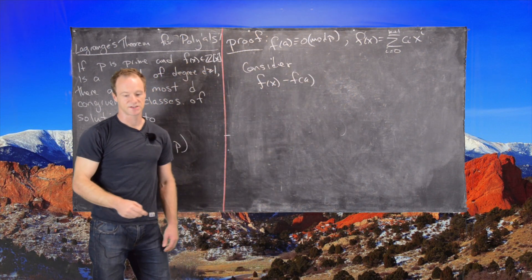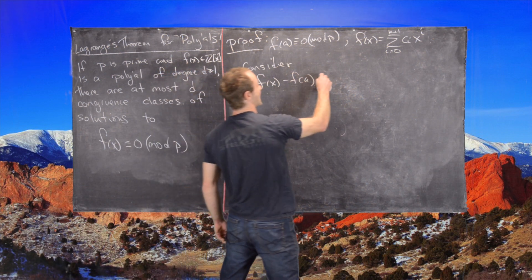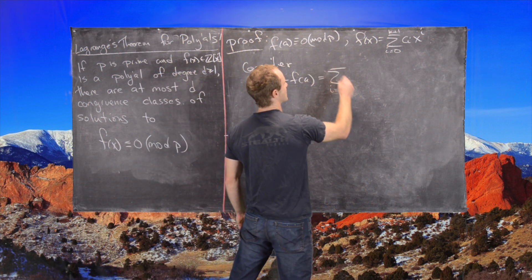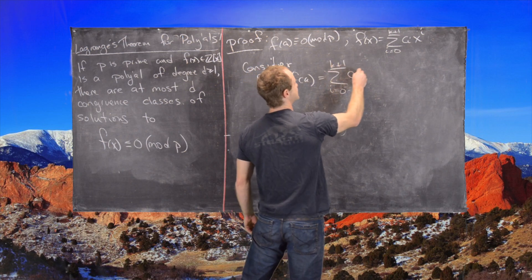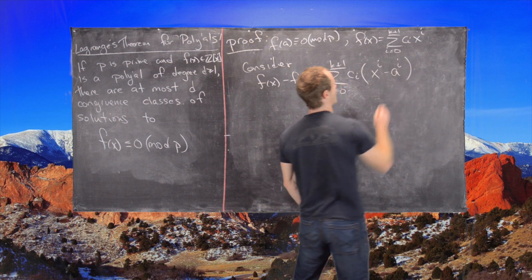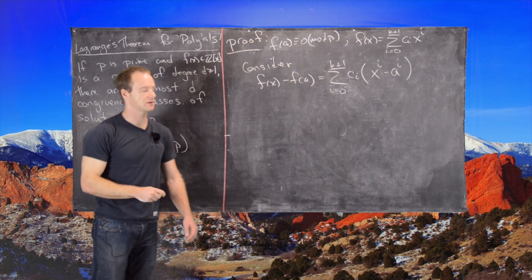Let's consider F of X minus F of A. That's going to be the same thing as the sum I equals 0 to K plus 1 of C of I and then X to the I minus A to the I.